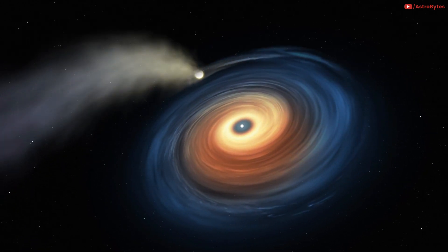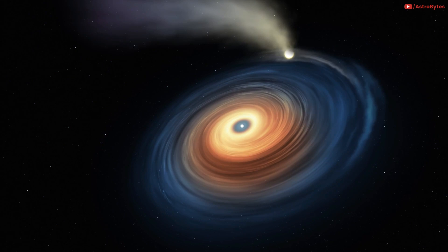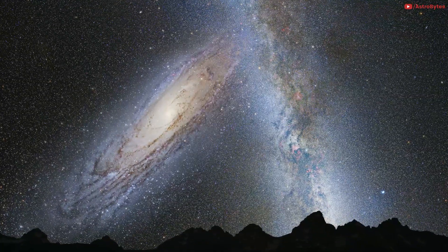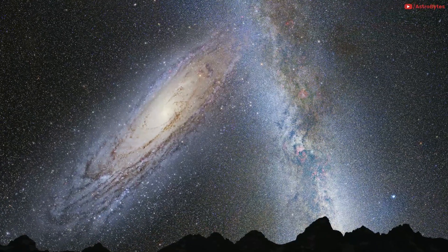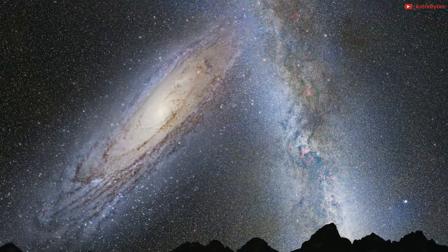Both the Milky Way and Andromeda are similar in terms of mass. They will collide with each other in roughly 4 billion years and form a huge elliptical galaxy called Milkomeda.